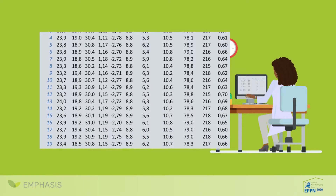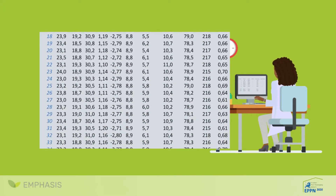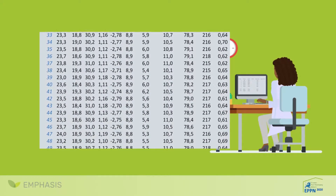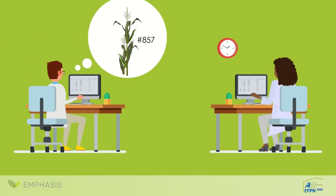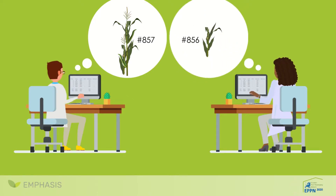Dr. Jimenez received data files from Dr. Jones with plant identifiers and results of measurements. When considering plant 857, Dr. Jones sees a big plant, but there was a confusion in the file with plant 856 — Dr. Jimenez sees it as small. They need long exchanges of emails and phone calls to understand the mistake. And what happens if Dr. Jones now works elsewhere?